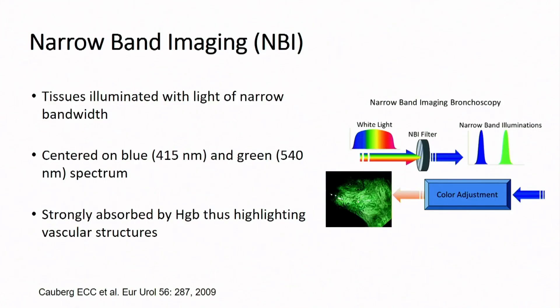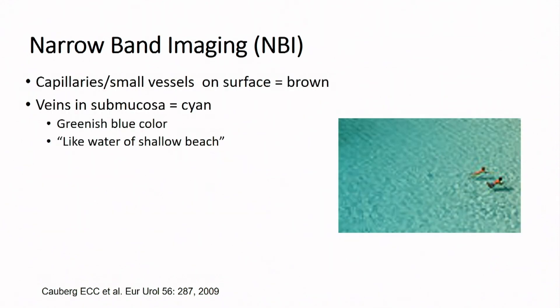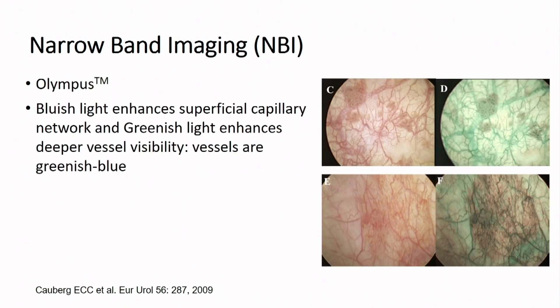Narrowband imaging takes advantage of the fact that tissues illuminate with light in a narrow band. If you focus on blue and green — the spectrum where hemoglobin is absorbed — you can highlight vascular structures. Tumors show up as brown structures on the surface, and the deeper blood vessel capillaries appear more green, like being on a shallow beach. This is what narrowband technology, which is proprietary through Olympus, provides.